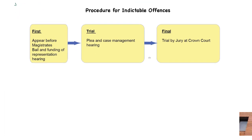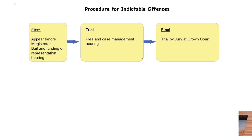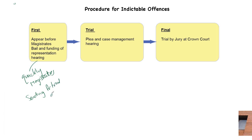Indictable offenses become far more complex. As ever, they always appear before a magistrates' court where you will hear a bail and funding of representation hearing, but that passes quickly through the magistrates. The magistrates hear these things very quickly because, going back to the Criminal Procedure Rules, it has to be done expeditiously. Questions are asked only on issues of bail and who will fund the defendant - that's all that's asked in magistrates. The defendant then gets a sending for trial order. This is an indictable offense only, so it is going to go to crown court - the magistrates just need to deal with bail, representation, and then send for trial.